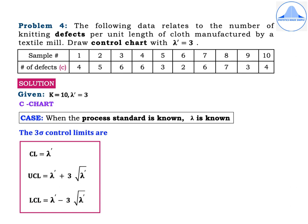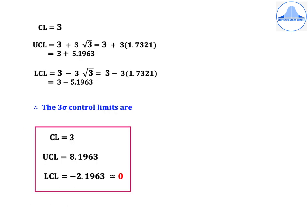For the C chart, the case is when the process standard is known, that is the lambda value is known. The 3-sigma control limits are: CL = lambda dash, UCL = lambda dash + 3√(lambda dash), and LCL = lambda dash − 3√(lambda dash). UCL = 3 + 3×1.7321 = 3 + 5.1963. Similarly, LCL = 3 − 5.1963. Therefore, the final 3-sigma control limits are CL = 3, UCL = 8.1963, and LCL = −2.1963, approximated to 0.